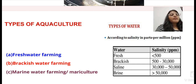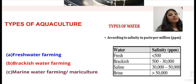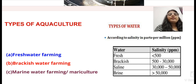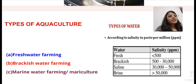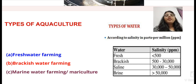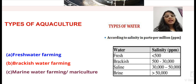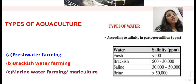Farming of aquatic animals and plants in freshwater like ponds, rivers, and streams is called freshwater farming. Farming of aquatic animals and plants in brackish water is called brackish water farming. Farming of aquatic animals or plants in marine water or saline water is called mariculture or marine water farming.